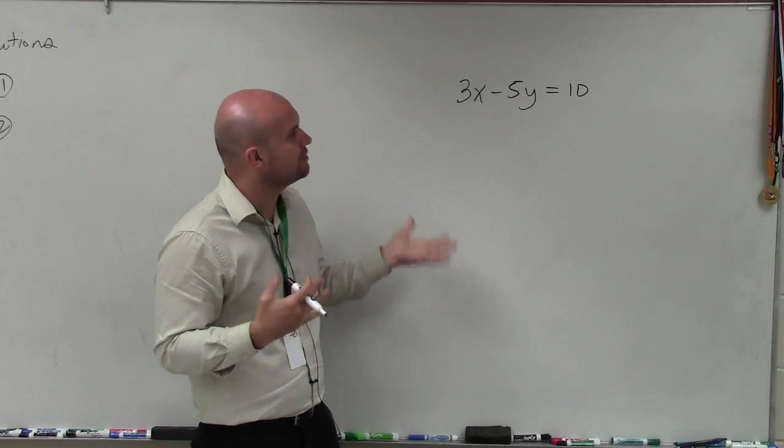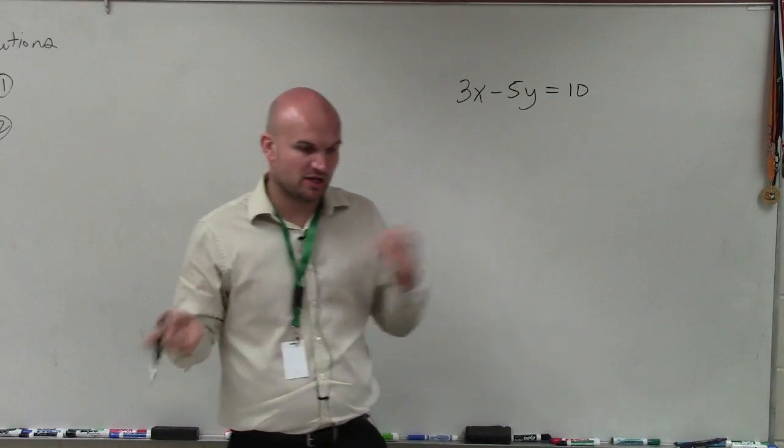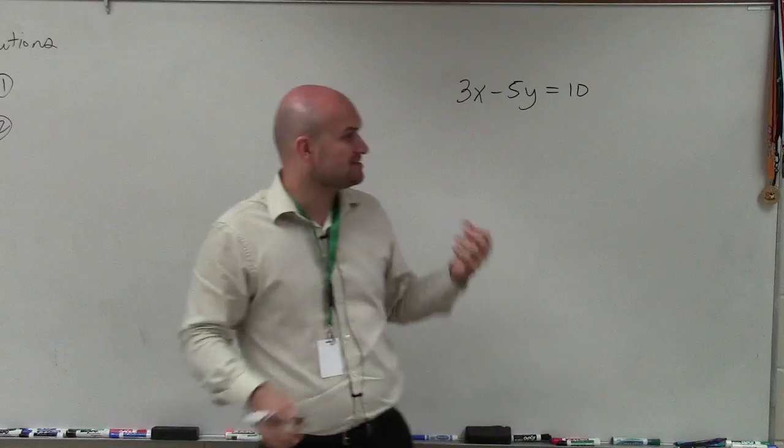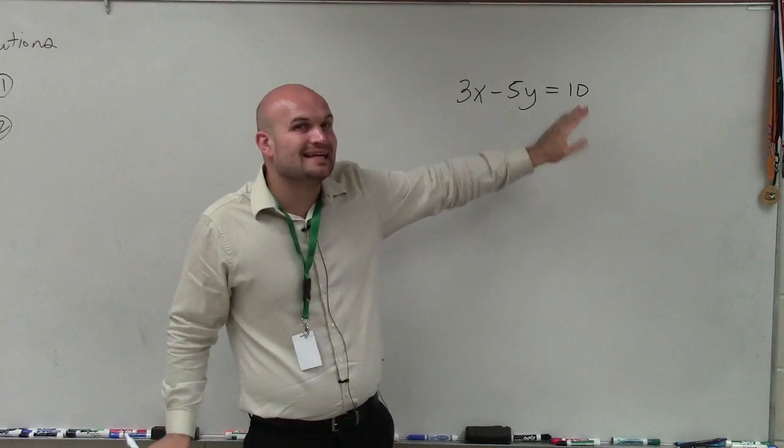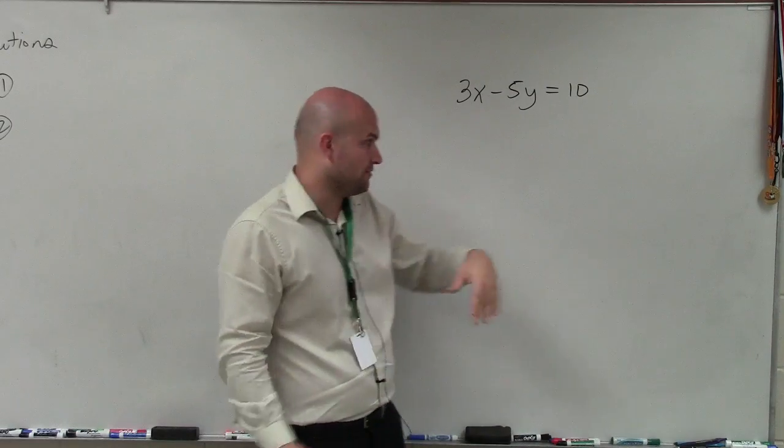Now, of course, we can look into graphing this by intercept form, by plugging a 0 in for x and y and determining the intercepts. But since both 3 and 5 do not divide into 10 evenly, I am going to elect to use the slope-intercept form.